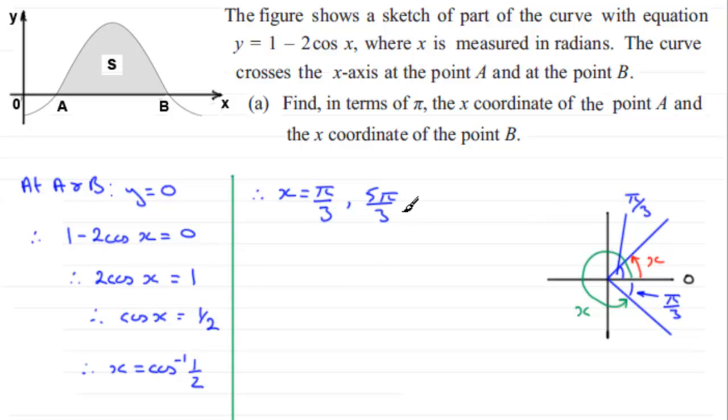And so therefore, we can see that the x-coordinate of A must be the smaller value. So the x-coordinate of A is going to equal pi upon 3, and of B, it's going to be 5 pi upon 3. And there's the answers to our x-coordinates for A and B.